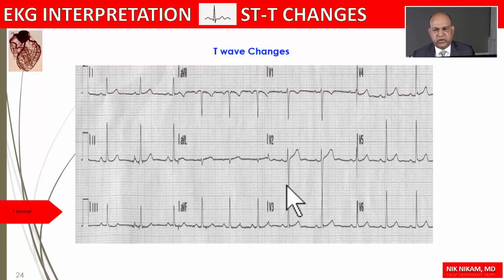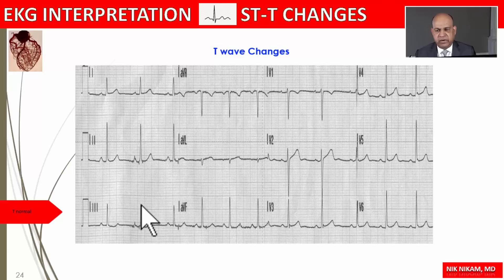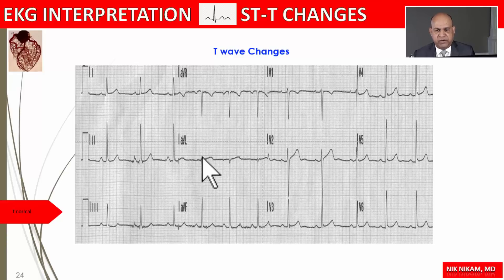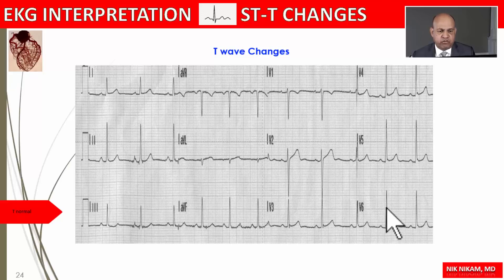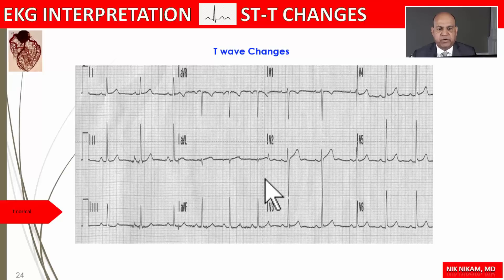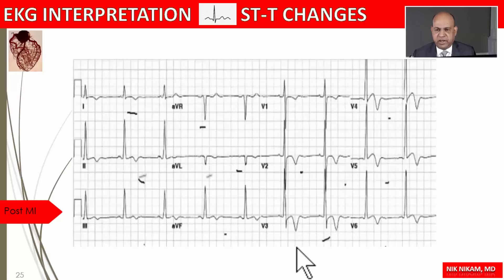Now let's talk about T wave changes. Here's a normal electrocardiogram where we expect the T waves to be smooth and rounded in lead I, lead II. In lead III the T waves may be inverted as a normal variation. In aVR the T waves are generally inverted. In aVL and aVF you expect T waves to be upright. T waves are inverted in V1, but upright in the remaining chest leads. Any deviation from this may represent some type of T wave change.